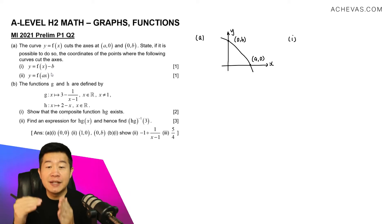So it is going to be a translation of b units in the negative y direction. So this point here is going to be translated by b units in the y direction. So the x coordinate remains the same.